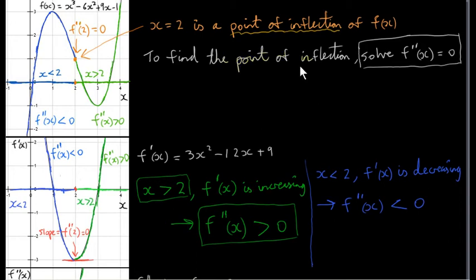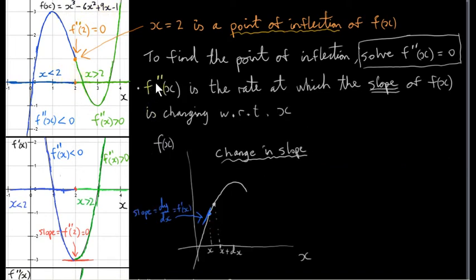To find the point of inflection of any function, if it has one, we need to solve the equation f double prime of x equals 0. For this particular function, the solution is x equals 2. We can think of f double prime of x as being the rate at which the slope of f of x is changing with respect to x — not the rate at which f of x itself is changing, but the rate at which the slope is changing.